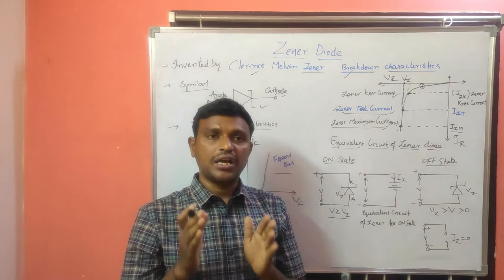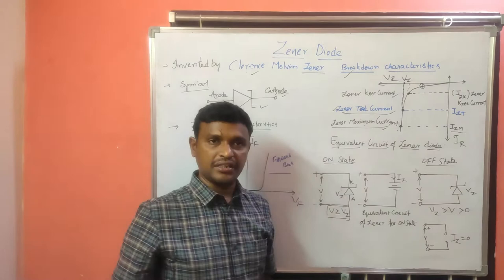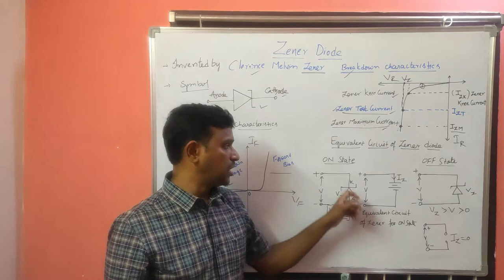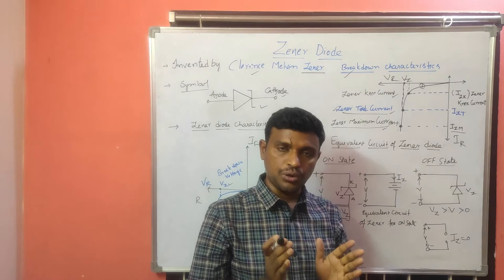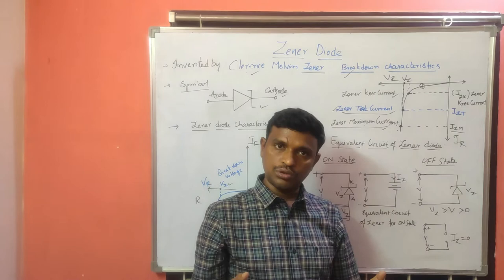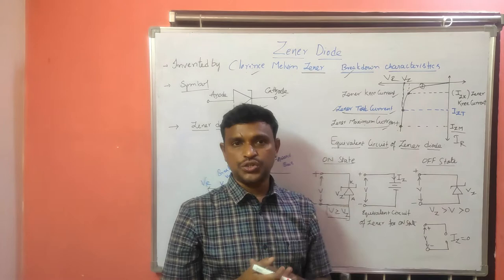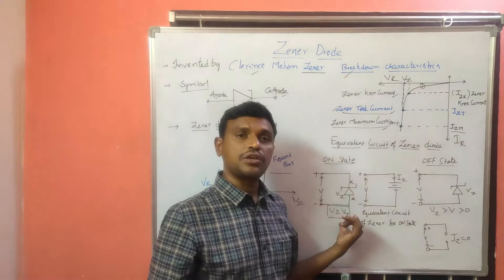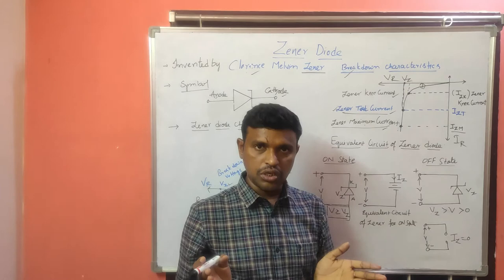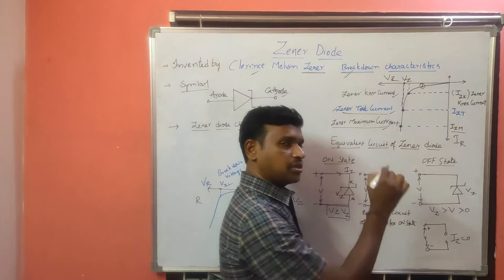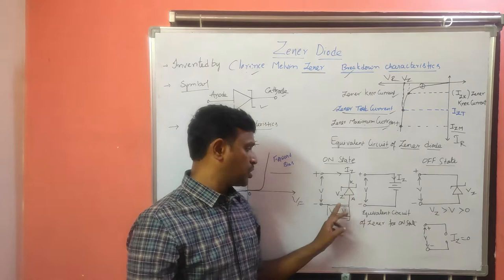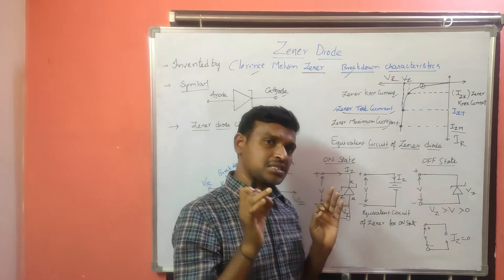When the applied voltage is greater than or equal to the junction breakdown voltage of the GINA diode, that state is called the ON state. At that condition only, the current will increase sharply and more current Iz flows through the junction of the GINA diode. Iz is the GINA current after breakdown.